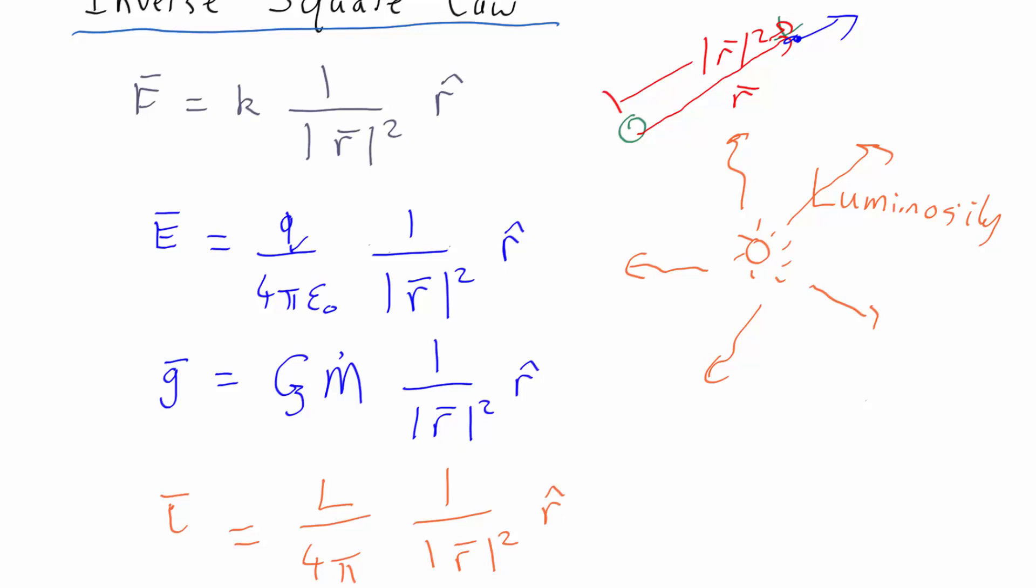So as you can see, they're all very much the same. One difference I should put in: we should probably put a minus sign there for the gravitational field because the gravitational field doesn't point away, it points inwards. So they're all very similar - a constant, 1 over r squared, and then the r vector - and there's actually a fundamental reason why they're all so similar.